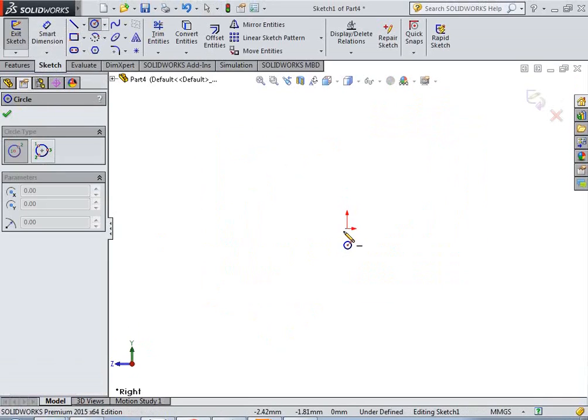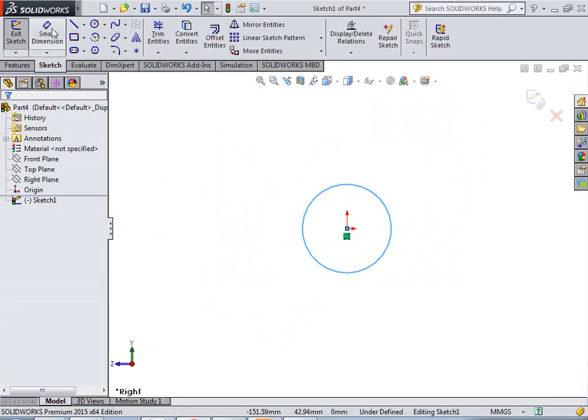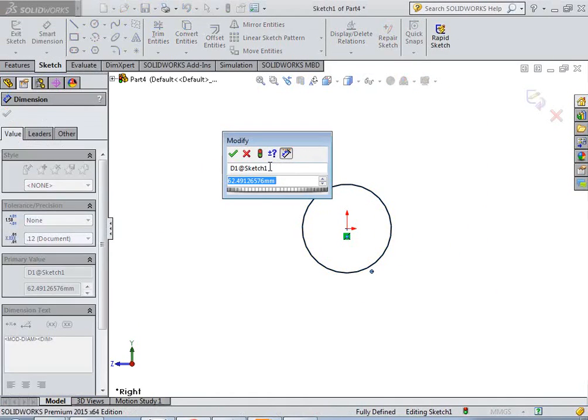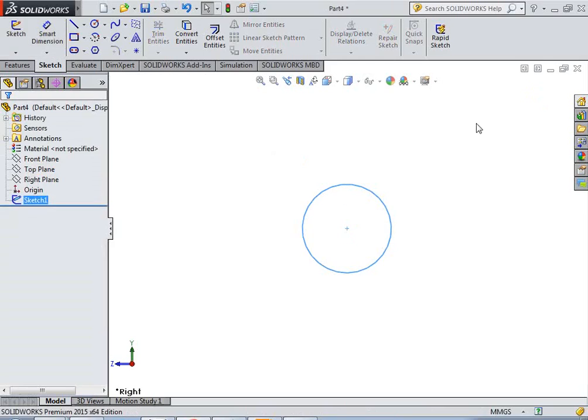Sketch a circle, dimension the circle diameter 100, exit the sketch.